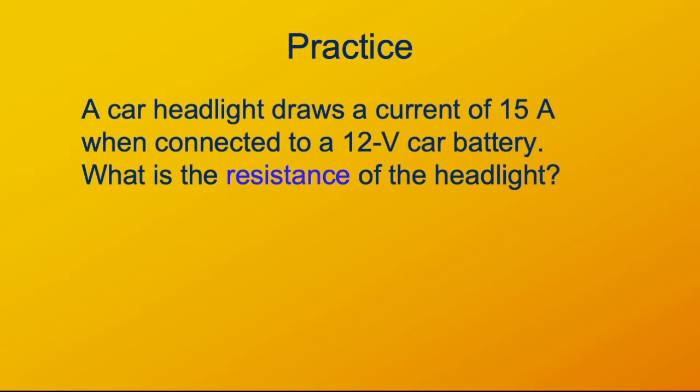V is 12 volts. I is 15 amperes. So 12 divided by 15 is 0.8, or four-fifths. So it's four-fifths of an ohm as the resistance of the headlight.